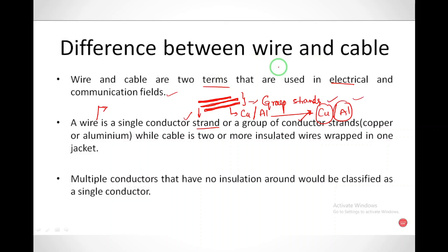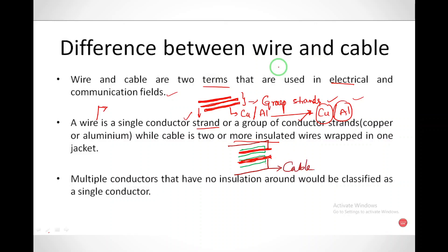A cable is two or more insulated wires wrapped in one jacket. So one conductor is wrapped in insulation, and a second conductor also has insulation on it. These two insulated conductors are then wrapped together in one jacket — that is called a cable. This is the difference between a wire and a cable.